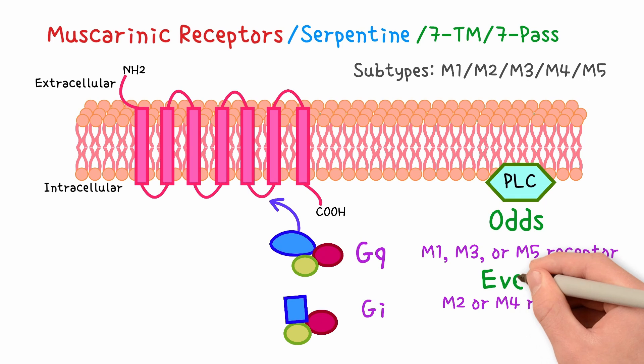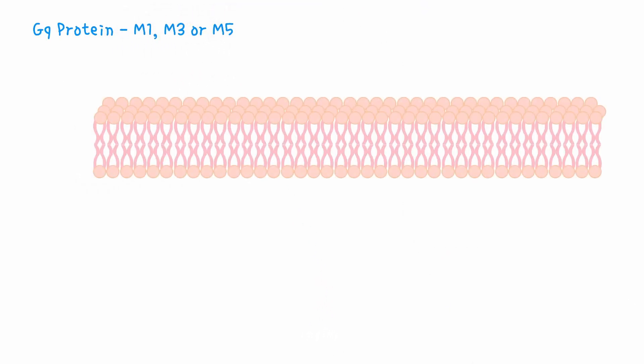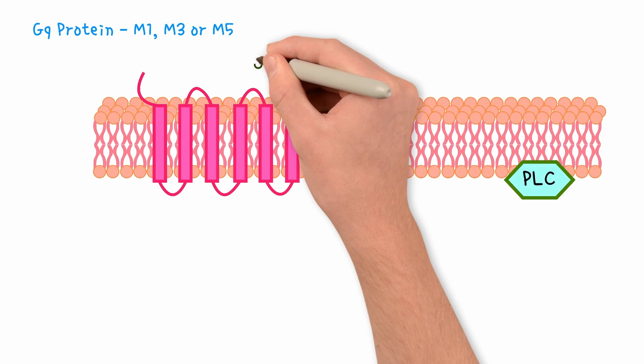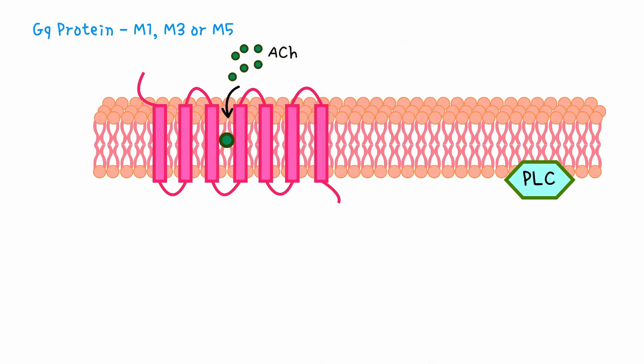If the receptor couples to the GQ protein, it is an M1, M3, or M5. Acetylcholine binds to the muscarinic receptor M1, M3, or M5, causing the receptor to change shape and bind to GQ protein, leading to its activation.